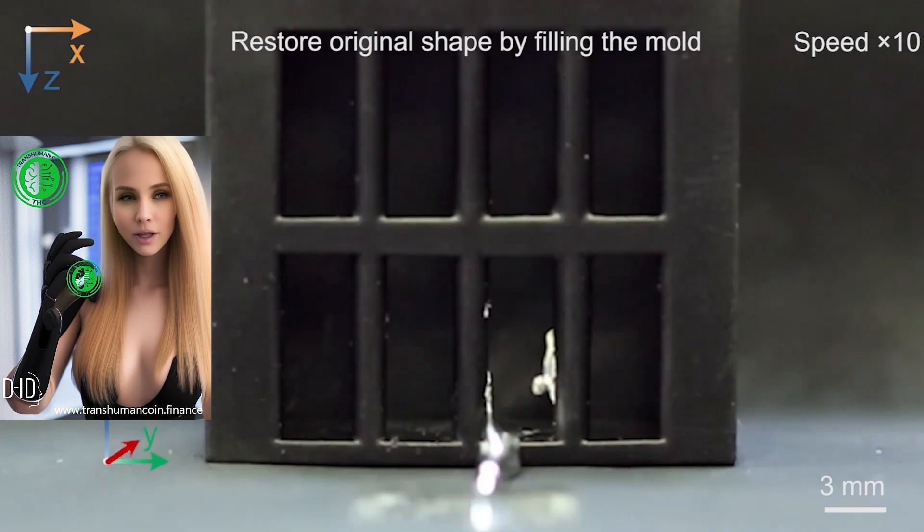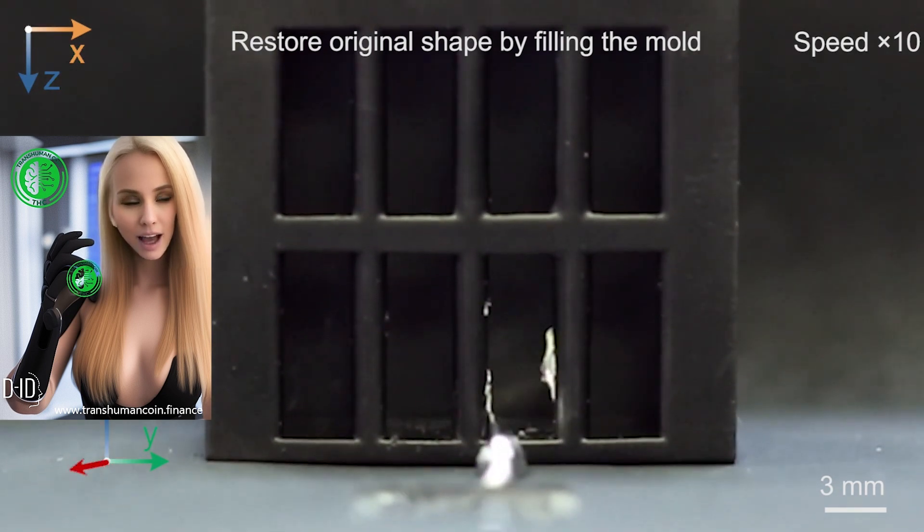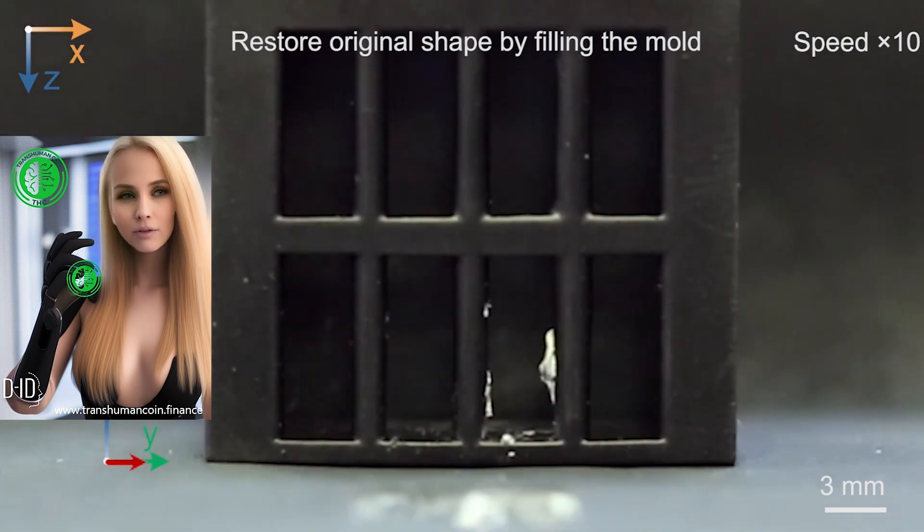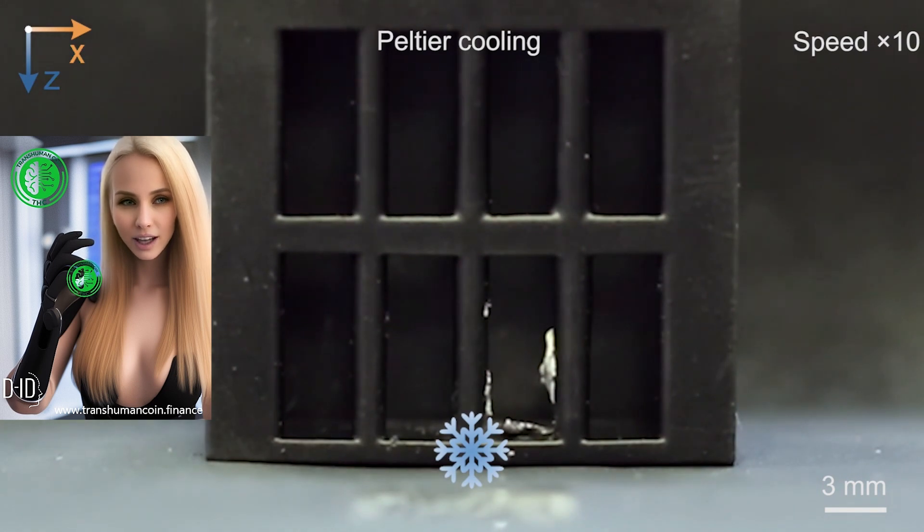The team's study was published in the journal Matter, where they explained that this new phase-shifting material, the magnetoactive solid-liquid phase transitional machine, was created by embedding magnetic particles in gallium.